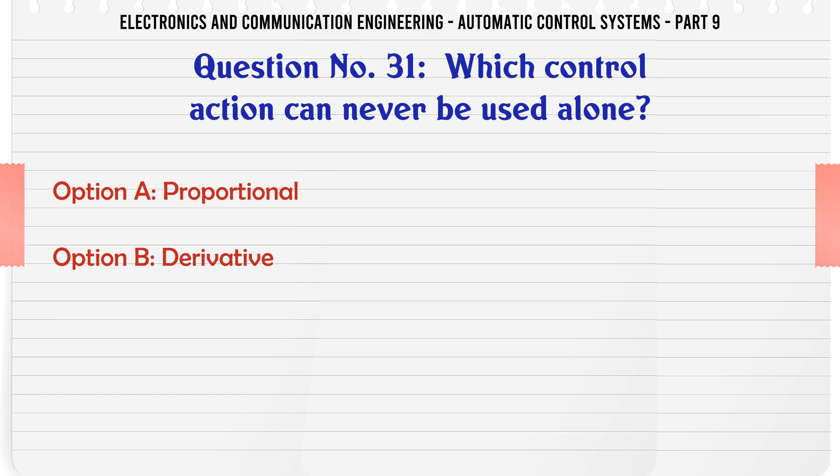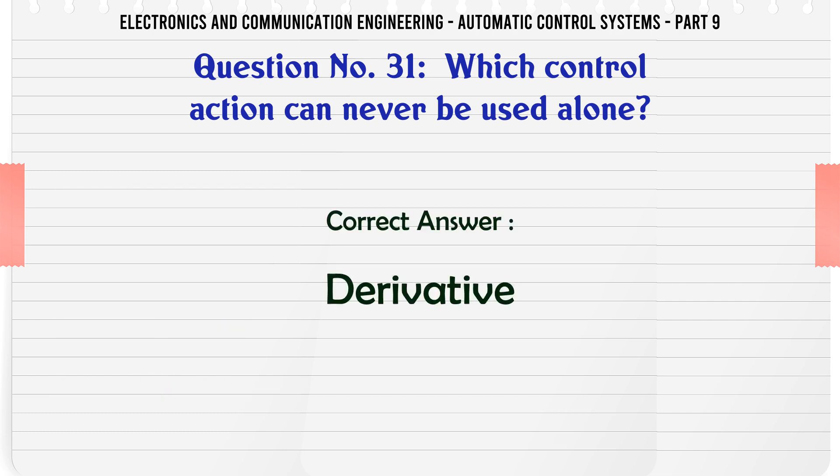Which control action can never be used alone? A. Proportional, B. Derivative, C. Integral, D. Both B and C. The correct answer is: Derivative.